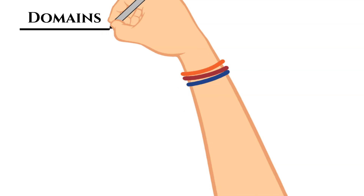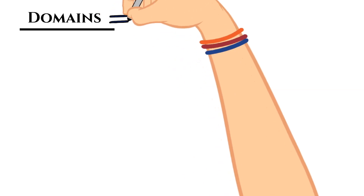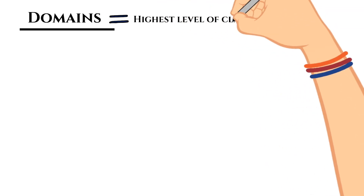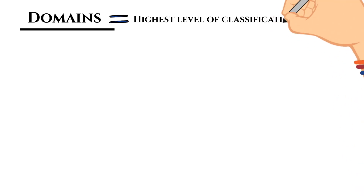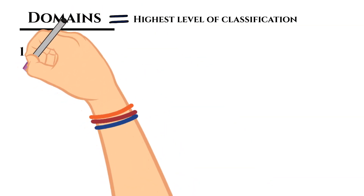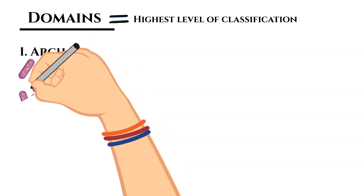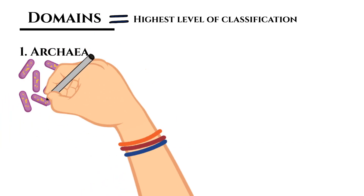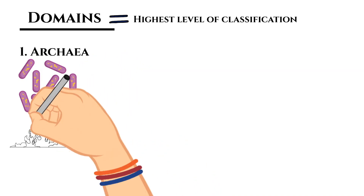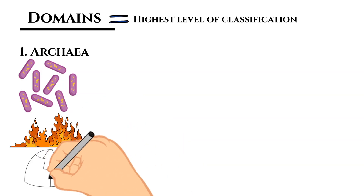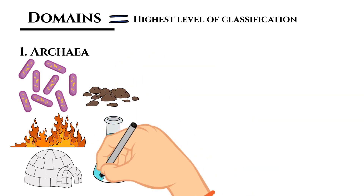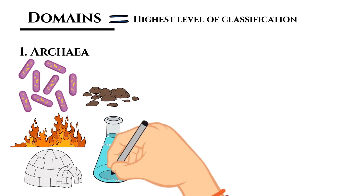The very first classification we use are domains — the highest level of classification, meaning it contains the most organisms. There are three domains across all living things. The first domain is Archaea. These are single-celled organisms different from bacteria, because they typically live in extreme environments such as very hot areas or soil with a very high level of acid.